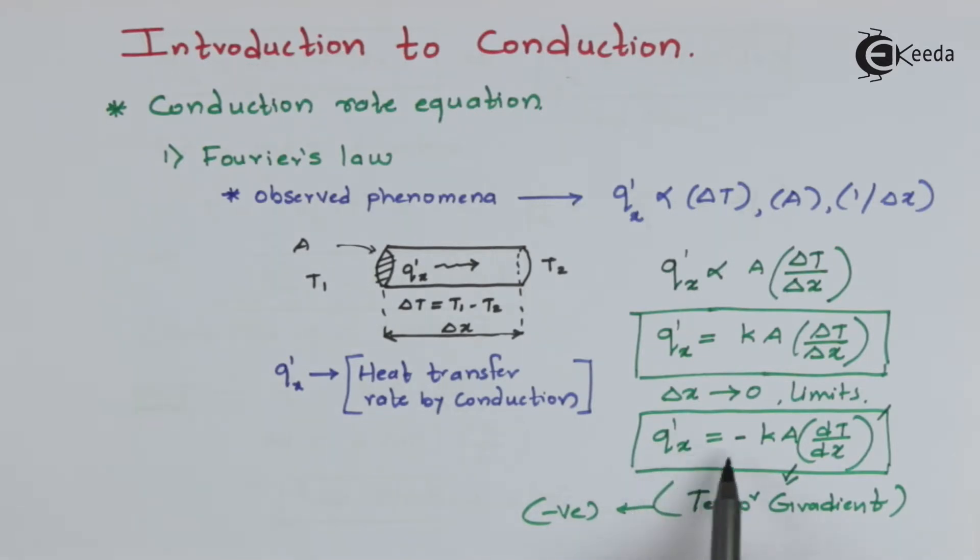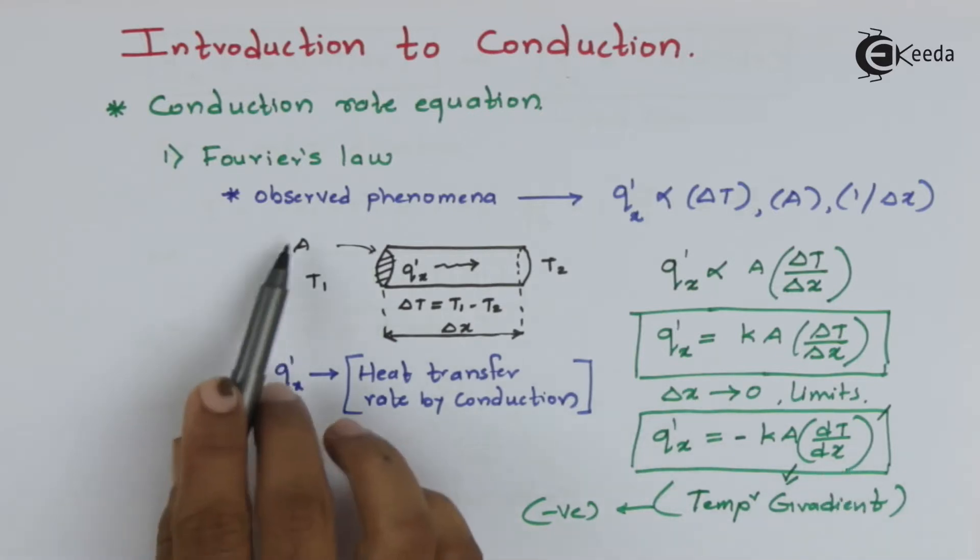So Q'x equal to minus KA dT by dx is an equation not derived from first principle but basically an observed phenomenon.